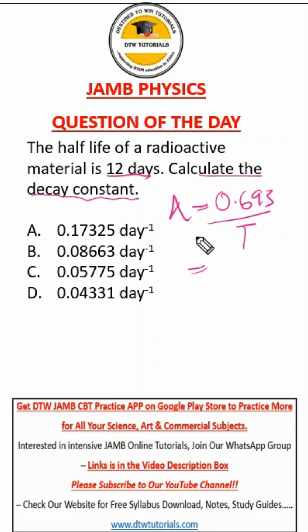The formula to get your decay constant is 0.693 over T, and T is your half-life. They've told us that half-life is 12 days, so it is just 0.693 over 12.